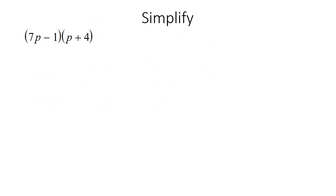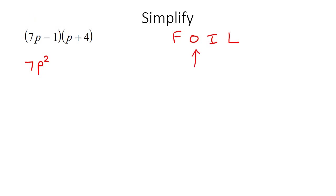Here's our next example. Let's do FOIL again. The F stands for the first one in this bracket and the first one in this bracket — multiply those together and that's going to be 7p to the power of 2. The next step is O, outer multiplied by outer, and that's going to give us 28p.